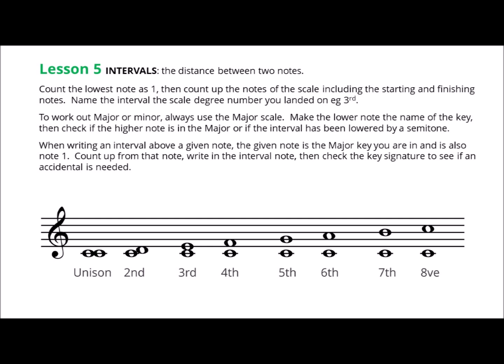When writing an interval above a given note, the given note is the major key you are in and is also note 1. Count up from that note, write in the interval note, then check the key signature to see if an accidental is needed.